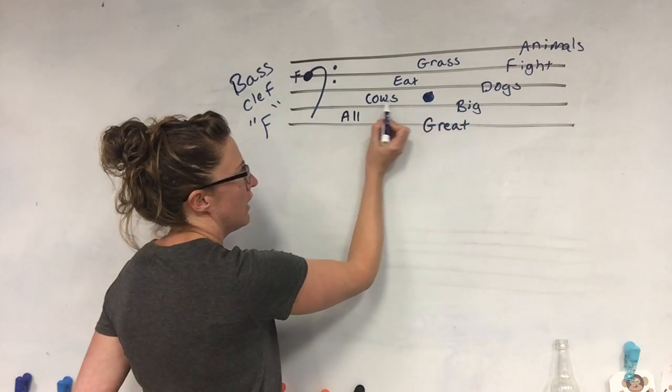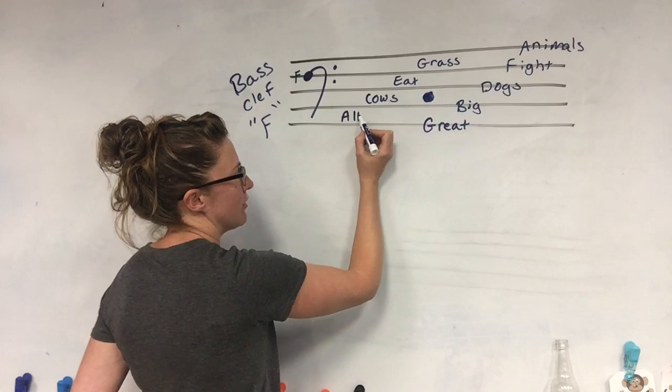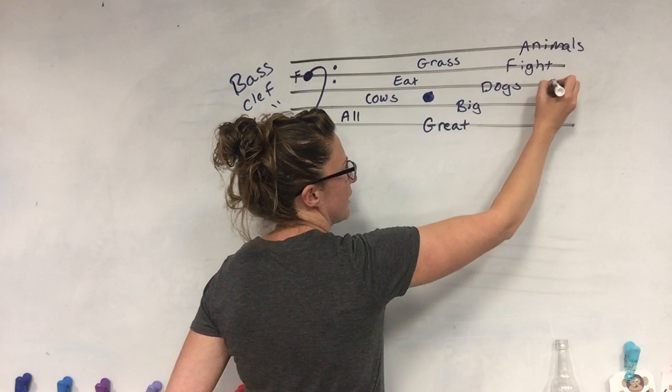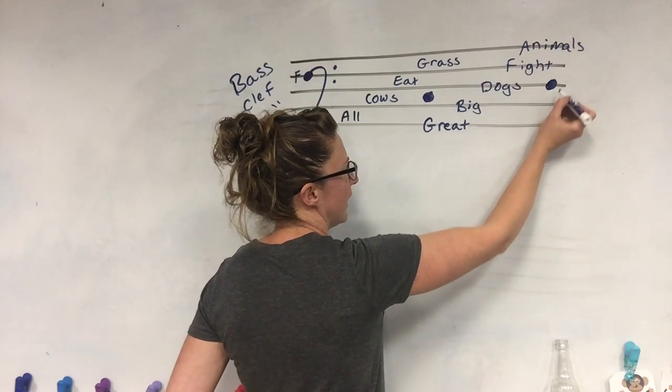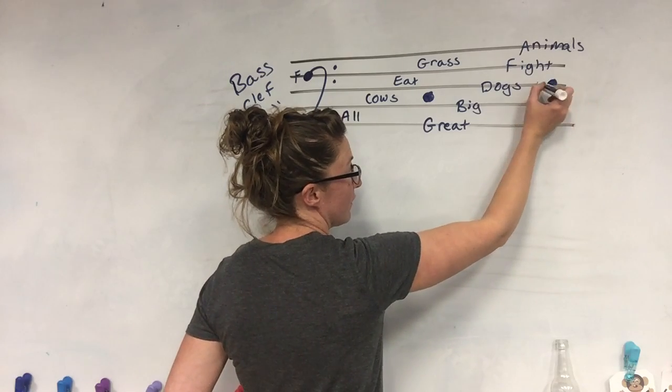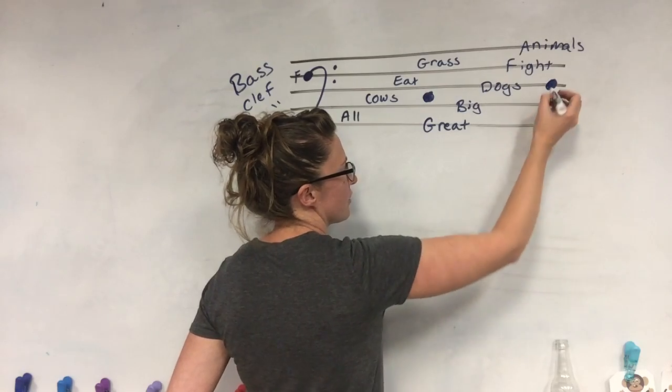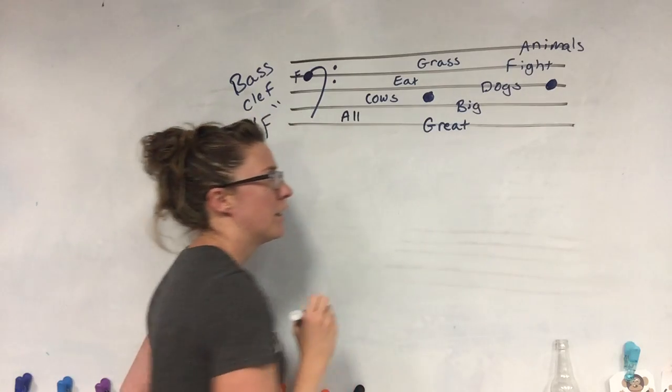the lines. It's in the second space up, so I know it's All Cows, so this note is C. If I have this note over here on the third line up, I know it's a line note because the line's going through it. The third line up is Great Big Dog, so this note is D.